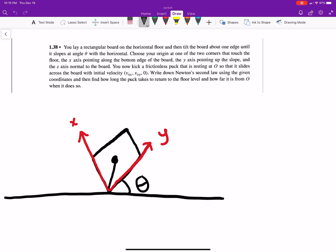Choose your origin at one of the two corners that touches the floor, the x-axis pointing along the bottom edge of the board, the y-axis pointing along the slope, and the z-axis normal to the board. You have a frictionless puck that is resting at the origin so that it slides across the board with an initial velocity in the x and the y but none in the z.